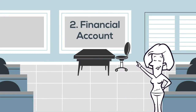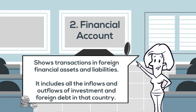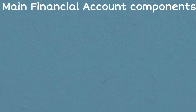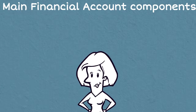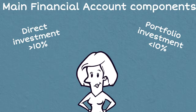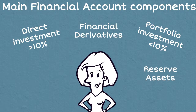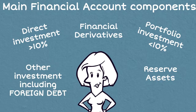The financial account shows all the transactions in terms of foreign financial assets and liabilities, including all the outflows and inflows of investment and foreign debt going in and out of that country. Transactions recorded here include direct or portfolio investment — direct investment is where investors buy more than 10% worth of shares in a company, and portfolio investment is when they purchase less than 10%. Other types include financial derivatives, reserve assets and other investment options such as foreign debt.